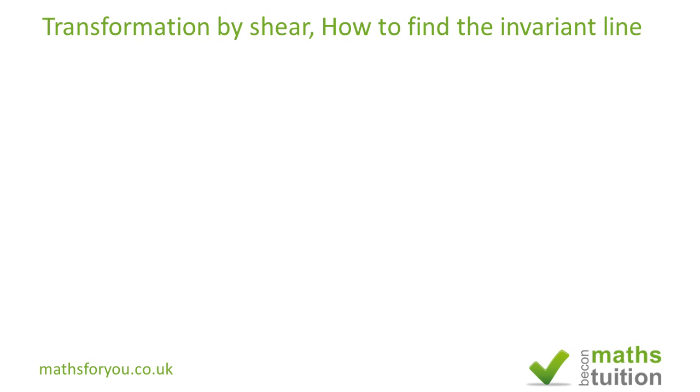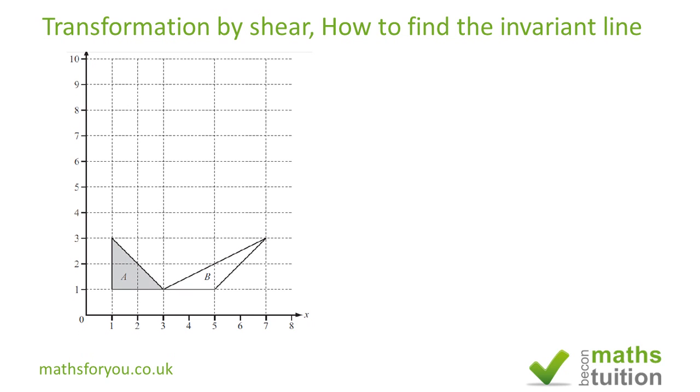We've got this past exam question where we want to find the invariant line. Object A is a triangle with points C, D, E, and the transformed object or image is B with points C prime, D prime, and E prime.